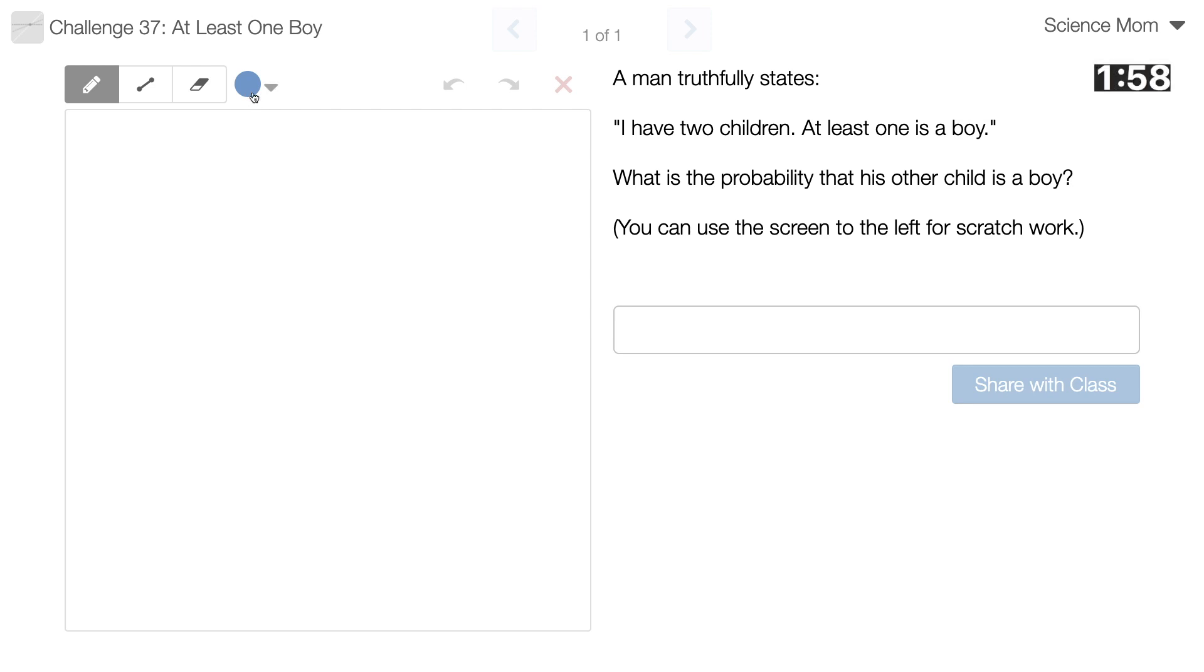He has two children and at least one is a boy. So he either has a boy and a boy or he has a boy and a girl. Those are our options.